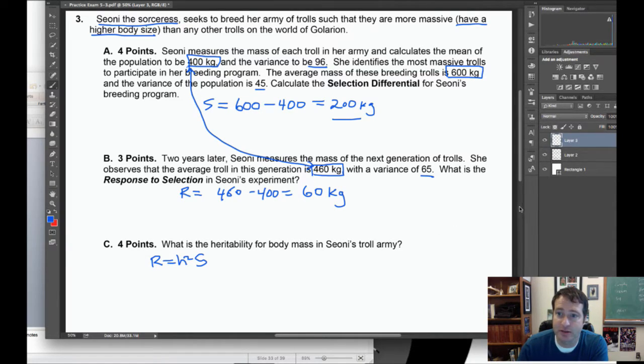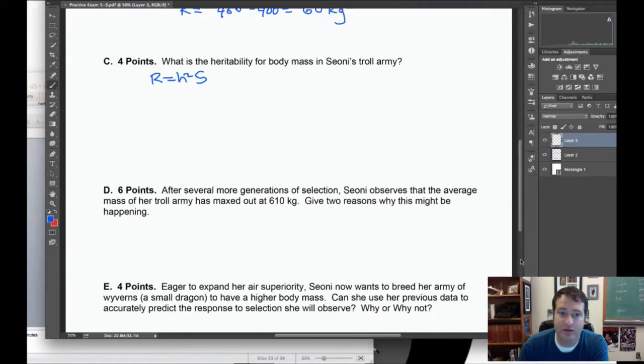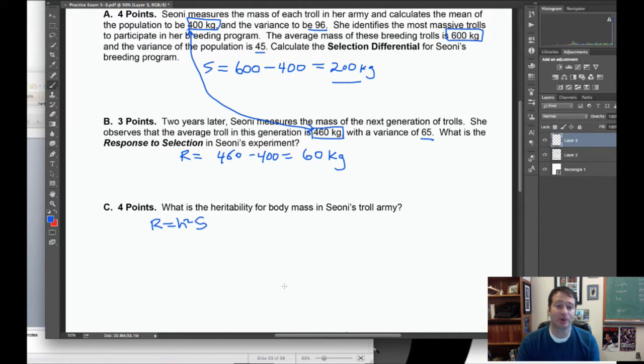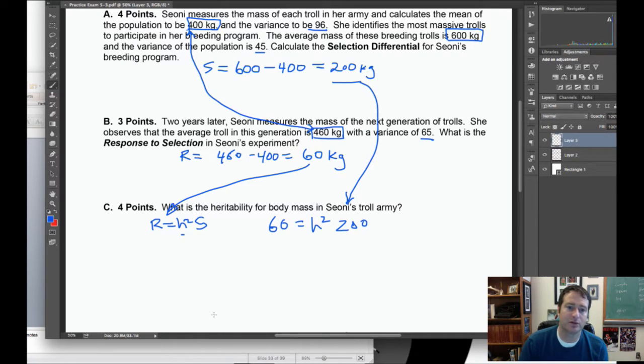It's a simple enough and important enough formula that really you should be able to remember. Recall that this is going to be a version of narrow sense heritability. So R equals h squared times S. If we plug our estimates of R and S into this formula, there's R, 60 equals heritability, and then there's S times 200.